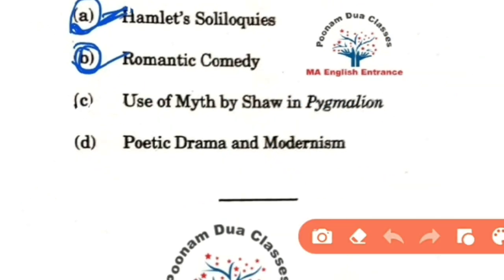Let us understand the paper pattern now. MEG 02 is specifically British drama. The question pattern remains more or less the same with very little change in recent years. It expects students to answer a total of 100 marks: question 1 is compulsory with 4 RTCs of 5 marks each, and the second part has 4 essay-type questions of 20 marks each. Again, in the end — thanks for watching this video, best of luck for the exam. Please mention your inputs in the comments, and do not forget to share and subscribe to the channel.